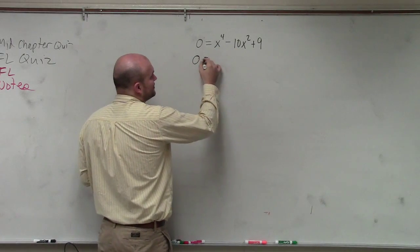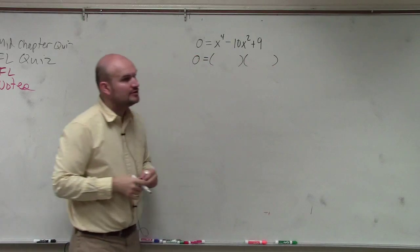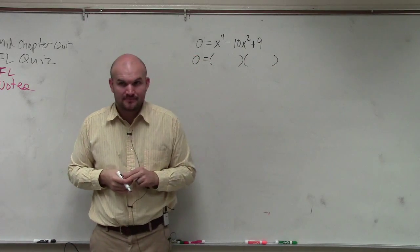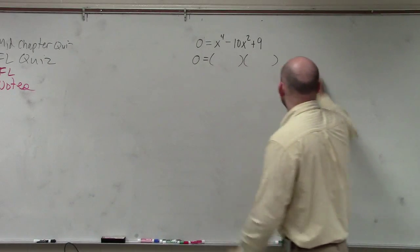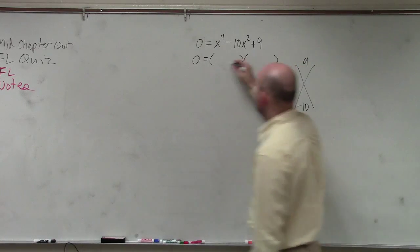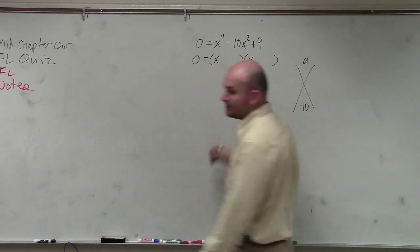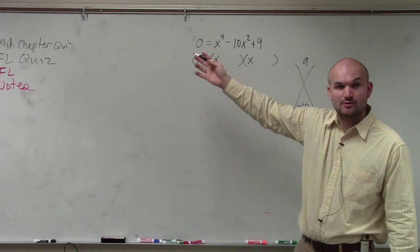Now, hopefully you guys remember that factoring a trinomial is going to produce a product of two binomials. And previously, what we did is we found out what two numbers multiply to give us 9 and then add to give us negative 10. And we basically took those values and we put them in for here. Because we always knew that the first two terms are going to multiply to give us x squared.